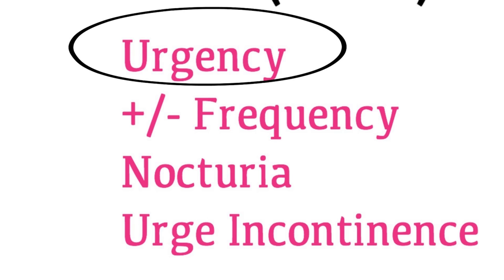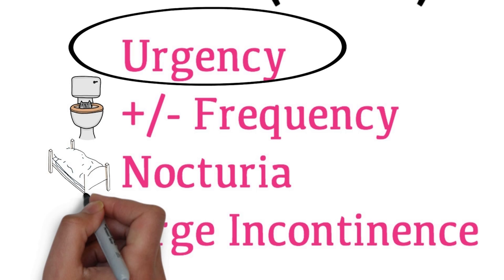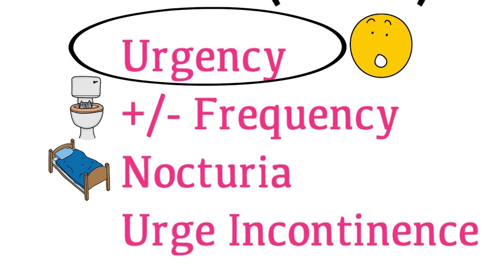A patient with frequency has to urinate often. They may also have nocturia, where they have to wake up at night to urinate. A patient with urgency will have a sudden need to run to the bathroom. If there is no bathroom close by or they are not fast enough to make it on time, they may leak urine.